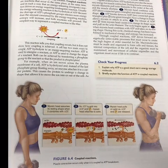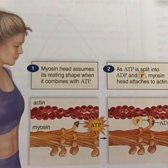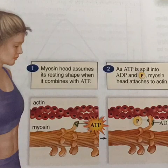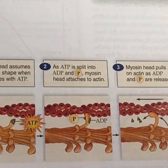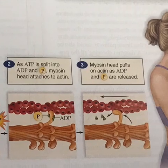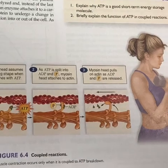Here's a look at the diagram of how muscle contractions occur. The myosin head assumes its resting shape when it combines with ATP, shown here with a triangle representing ATP. As the ATP is split into ADP and a phosphate, the myosin head attaches to actin. The myosin head pulls on actin as the ADP and phosphate are released, and this shortens the muscle, creating a muscle contraction.